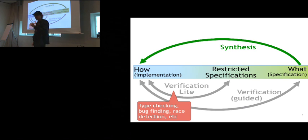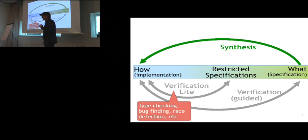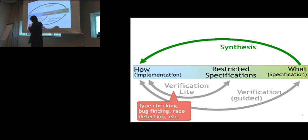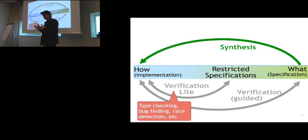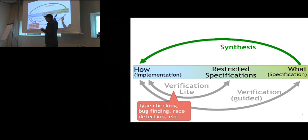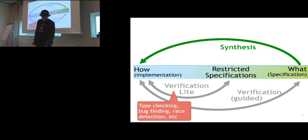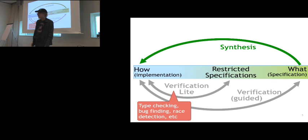But there's been this other idea called verification light that has been very successful in computer science, and it has to do with type checking, bug finding, race detection, and all kinds of static analysis of a restricted specification. You're not verifying full specifications, you're verifying partial specifications. Those can be fully automated, and they're very successful — kind of the bread and butter of PLDI and POPL for the last 10 years.